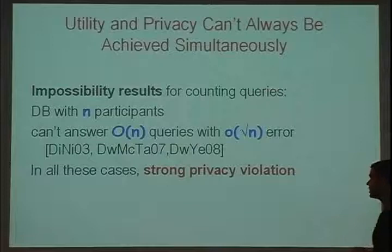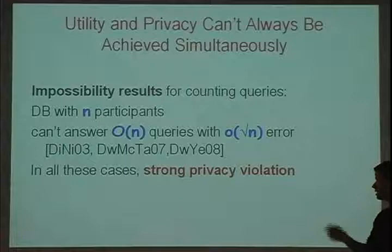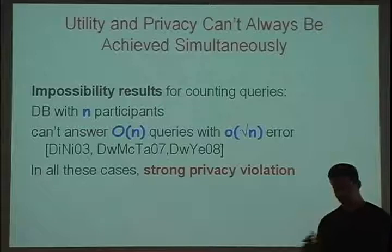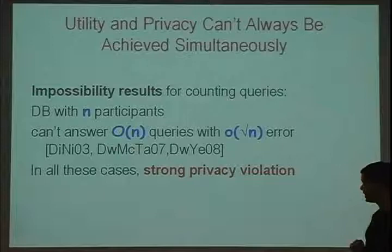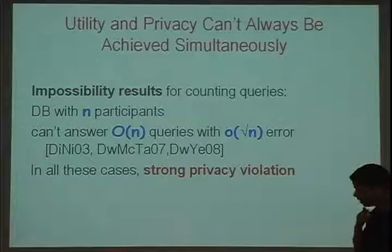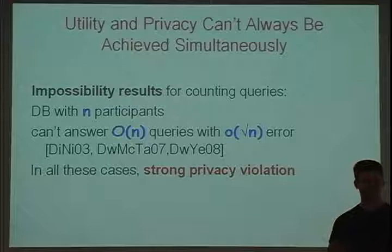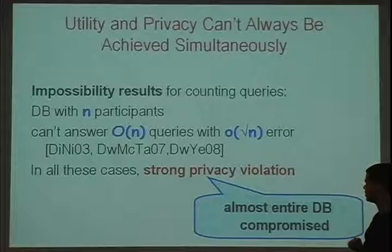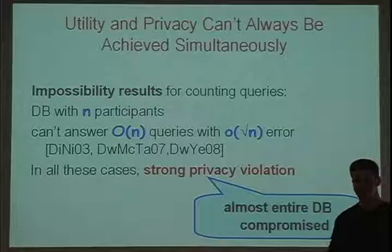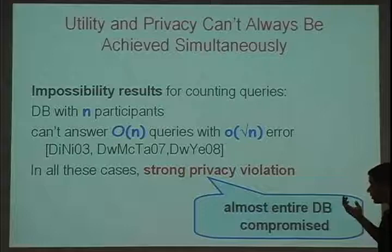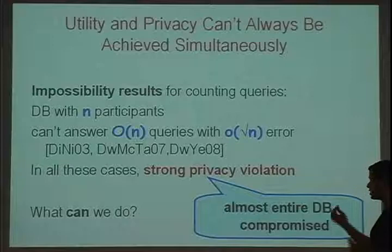So much for what we want in terms of privacy and utility. Let's briefly go over what was known from previous work. Unfortunately, early work showed that utility and privacy don't always go hand in hand. We have negative results specifically for counting queries: for a database with n participants, there are specific collections of n counting queries that cannot be answered with less than square root of n error. You can't answer too many queries with too little noise — and if you answer this many queries with less than square root of n error, almost the entire input database is compromised.